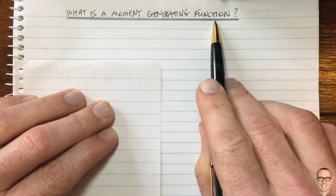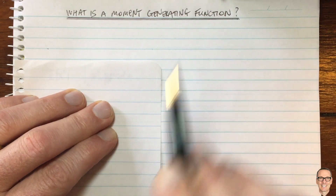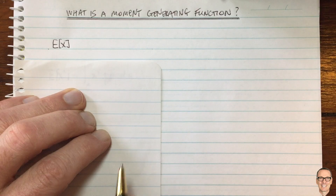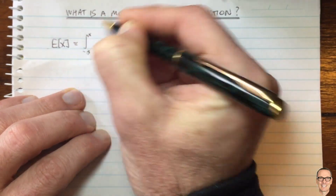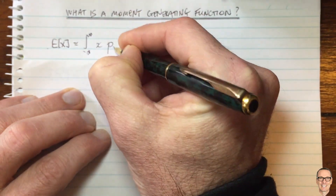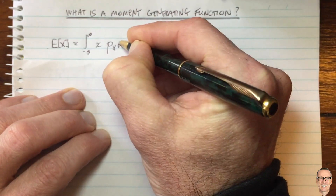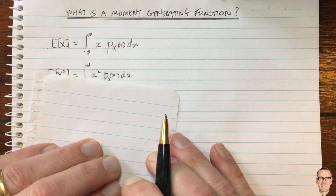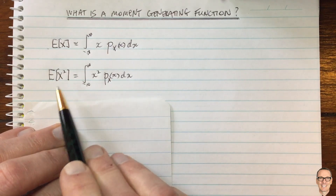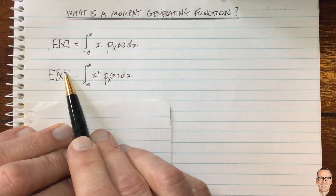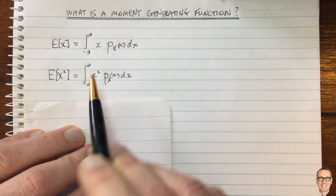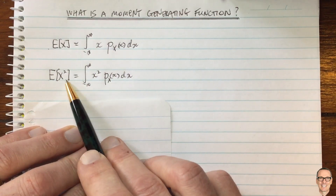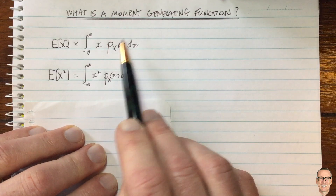What is a moment generating function? When talking about random variables, let's think about moments. We know the equation for the first moment, which is the expected value of the random variable. For a random variable x, that equals the integral from negative infinity to infinity of x times the pdf of x dx. This is the equation for the mean, the first moment. We also have the second moment, which is the expected value of x squared, and so on for all higher order moments.